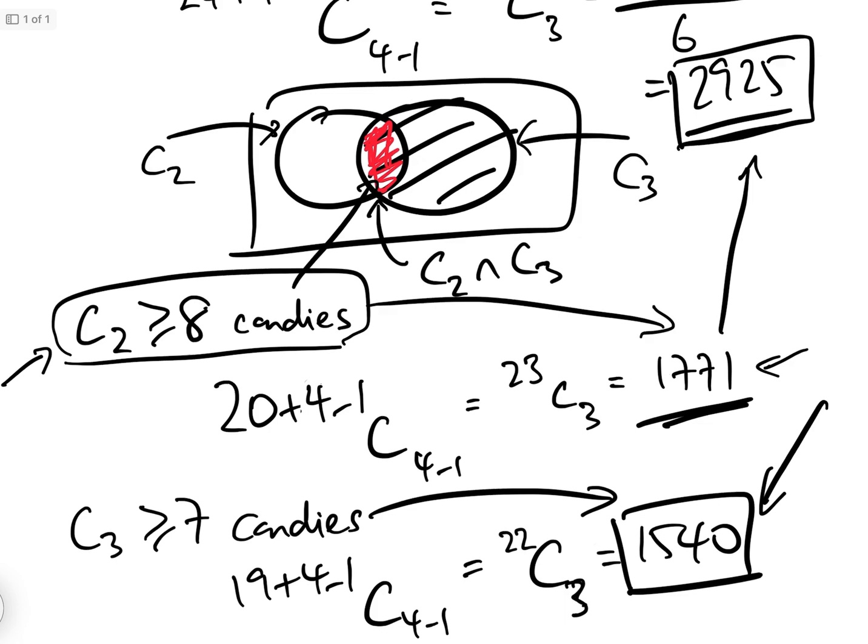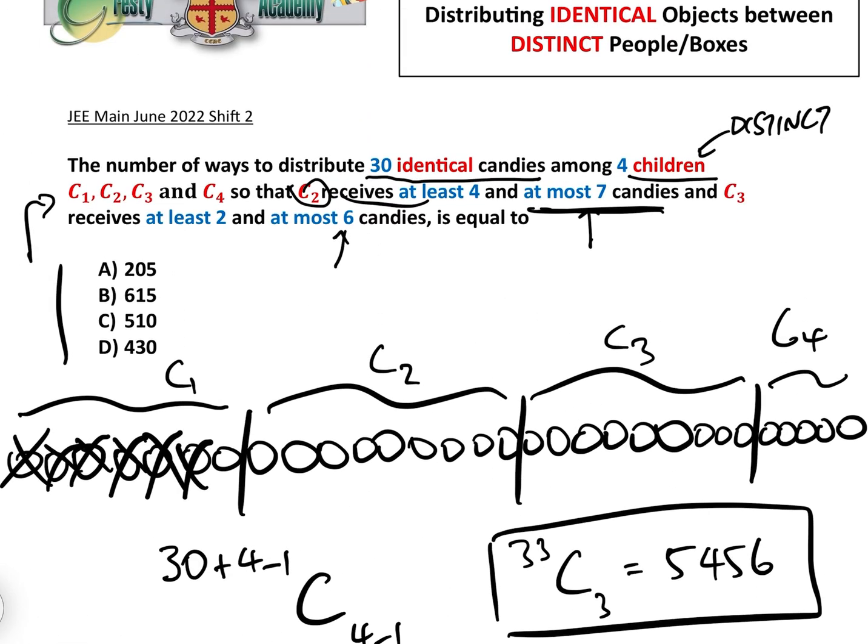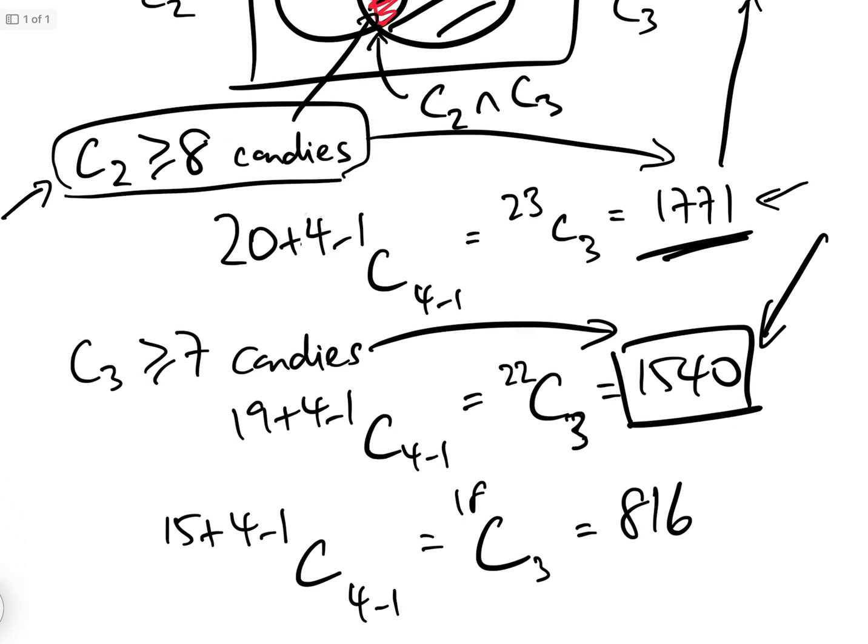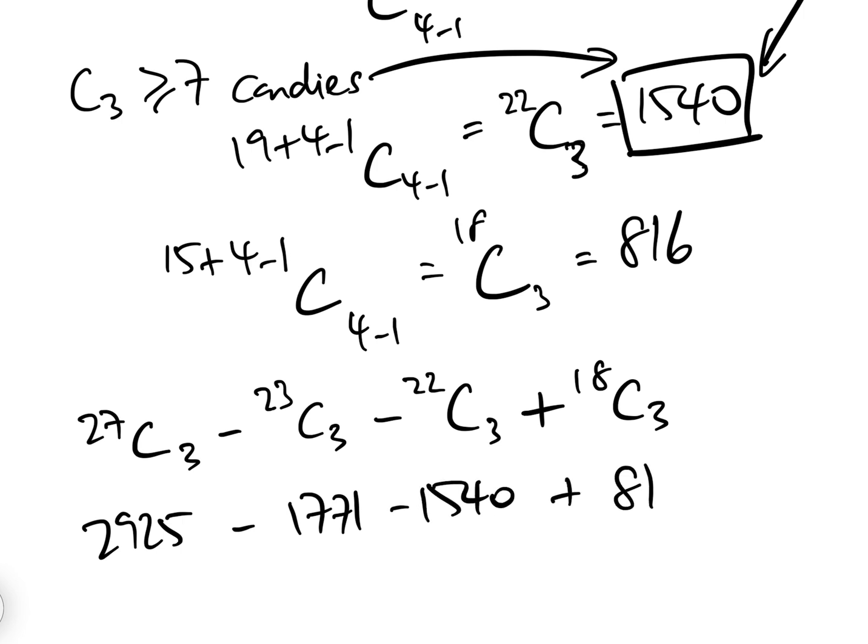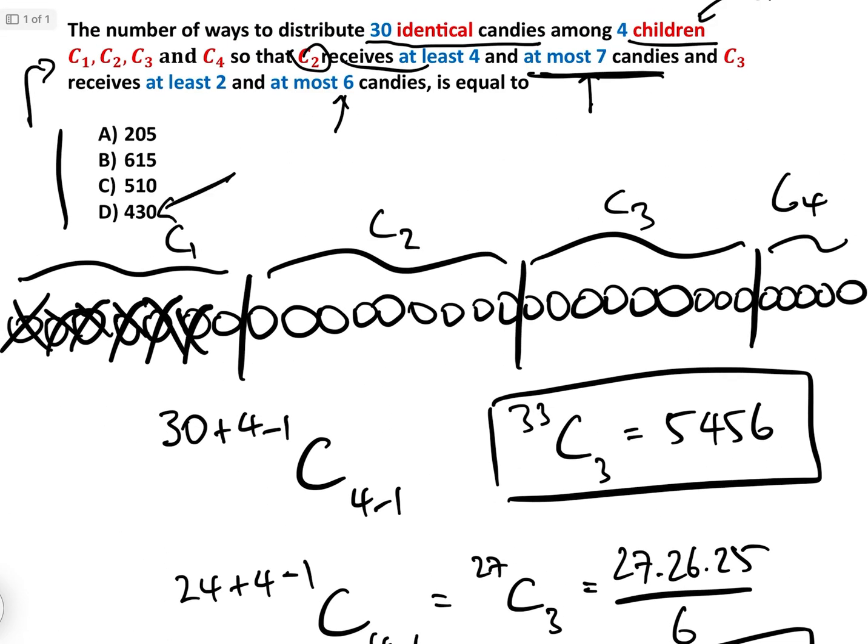So in the end, to find out the answer to this question here, what we have to do is we have to do basically 27C3, which is the number where there's at least 2 for C3 and at least 4 for C2, minus 23C3, which was where C2 had greater than or equal to 8, minus 22C3, which is where C3 had greater than or equal to 7, and add back the case where both of them had more than 8 or more than 7, which was 18C3, which equals 2925 take away 1771 take away 1540 add back 816, which equals 430. And 430 is option D.